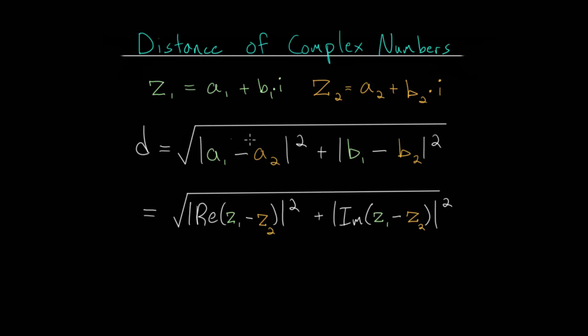So we could write this as A2 minus A1 and B2 minus B1, and similarly for Z1 and Z2, you can switch the order of those as well.